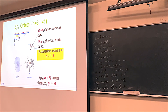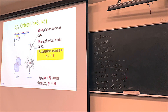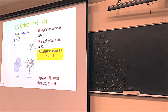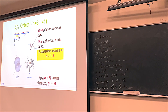L always goes up to N minus one. M sub L depends on L like L depends on N. M sub L goes from minus L to plus L in whole numbers, including zero. Zero for M sub L and L are actually meaningful numbers — if you see a zero for M sub L, it doesn't mean there's no M sub L value; that's actually a valid number. M sub S is only positive or negative one half, and we'll talk about that more in the next section.